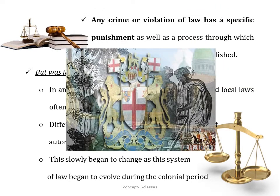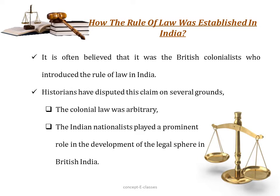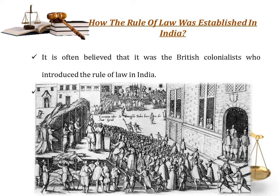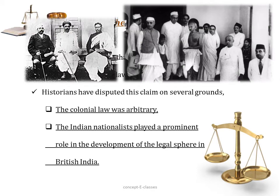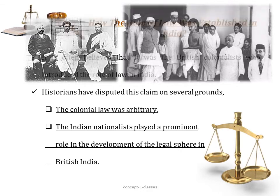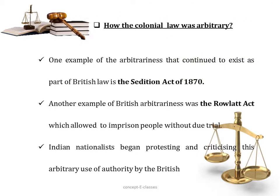But this slowly began to change during the colonial period because the system of law started to evolve. It was believed that it was a British colonialist who introduced the rule of law in India — meaning all the laws apply equally to all citizens and no one can be above the law. But the historians have disputed this claim because the colonial rule was arbitrary. It meant that the Britishers made rules based on their own interest rather than justice. But it was the Indian nationalists who played a very important role in the development of the legal sphere in British India.